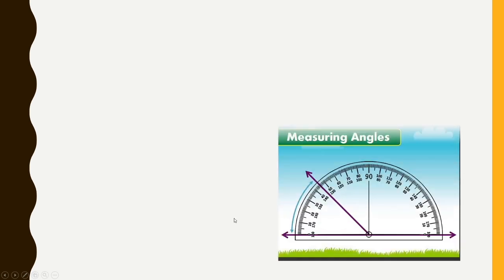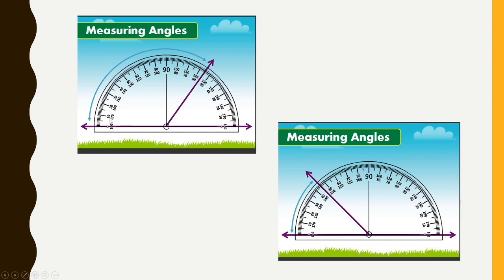Here the ray is going towards the left side, and we are measuring from the left side. Since 0 is on the outer scale, we use the outer scale to measure: 0, 10, 20, 30, 40, 50, 60, 70, 80, 90, 100, 110, 120, 121, 122, 123, 124, 125 — the measure of this angle is 125 degrees.